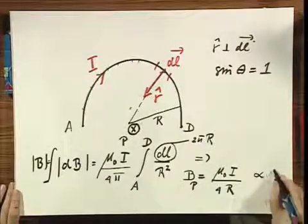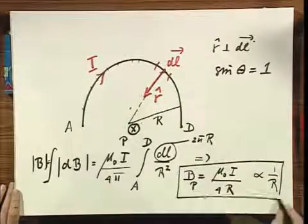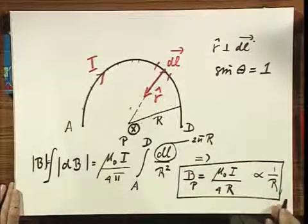And notice that it's inversely proportional to one over R, and that is very characteristic. You will never find an inverse r squared.